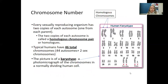Every sexually reproducing organism has two copies of each autosome, one from each parent. The two copies of each autosome are called a homologous chromosome pair, or homologs. Typical humans have 46 total chromosomes: 44 autosomes and 2 sex chromosomes. The picture shown is a karyotype — a photomicrograph of chromosomes in a normally dividing human cell. When we get into mutations, you'll see that sometimes there can be extra chromosomes.